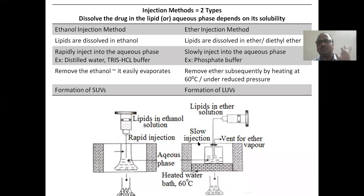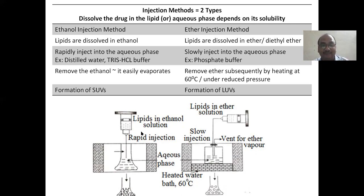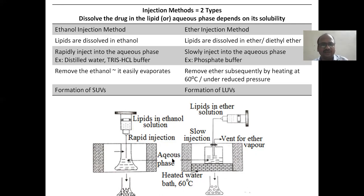Injection methods — very simple. Ether injection: we take ether in organic phase, and inject it slowly into the aqueous phase with evaporation using a heated water bath — ether requires heat to evaporate. Ethanol injection: we take ethanol, inject it rapidly into aqueous solution, and ethanol automatically evaporates without heating since ethanol is very easy to evaporate. Ether injection is used for LUV and ethanol injection is used for SUV. Advantage of ethanol injection: ether is very dangerous for health, whereas ethanol is not as harmful — we regularly consume ethanol.